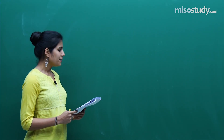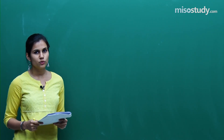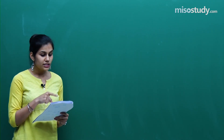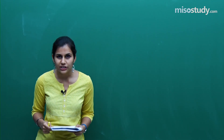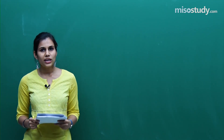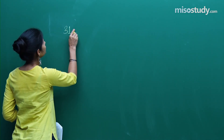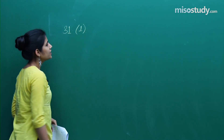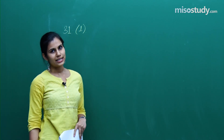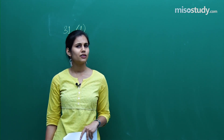The very first question — question 31 — is on integration from the 12th standard syllabus. There was a trigonometric expression whose integration you were supposed to find. Question 31 has the first option as the correct answer, not the second, not the third, not the fourth.